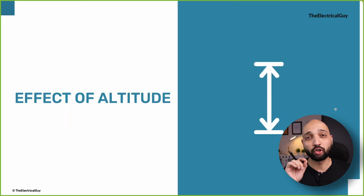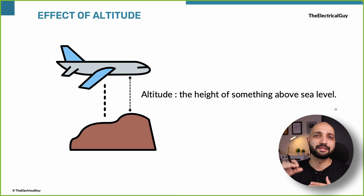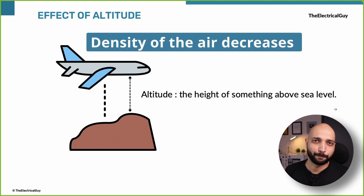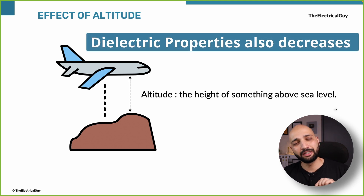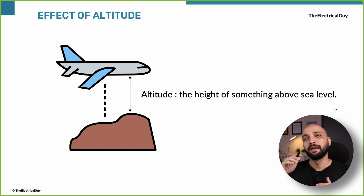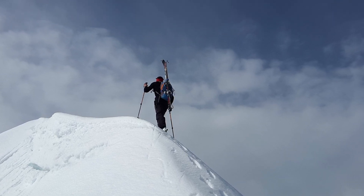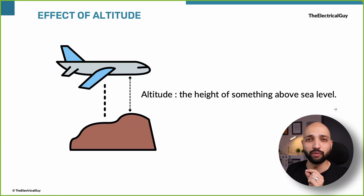Now let us talk about the effect of altitude, which is an important one. Altitude is the height of something above sea level. As altitude increases, the density of air decreases, which also degrades the dielectric property of the air. For example, if the dielectric property of air up to 1000 meters from sea level is 100%, then at 2000 meters altitude the dielectric property will drop by around 50%, and that causes issues with electrical switchgear.